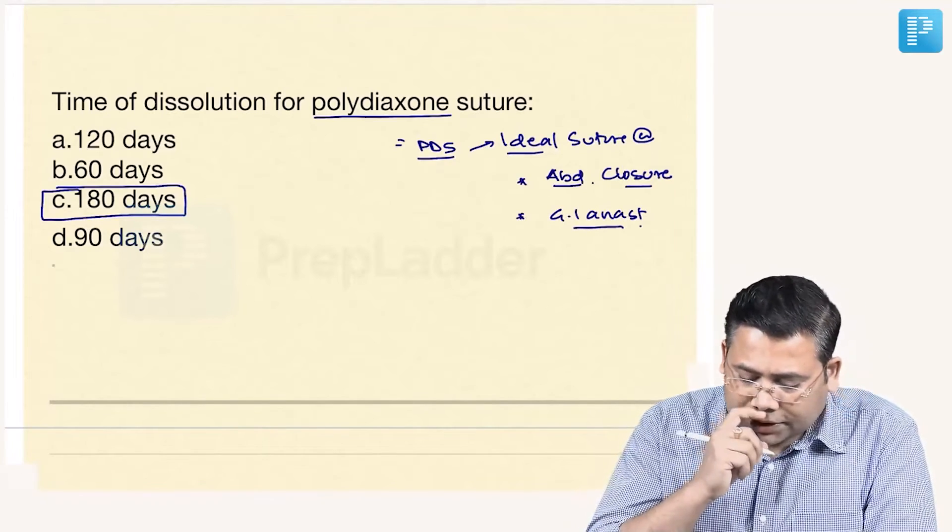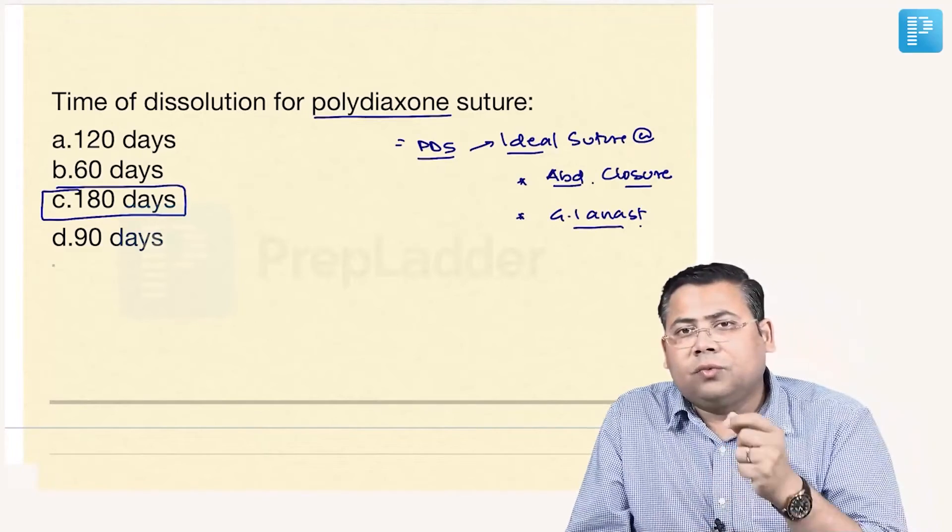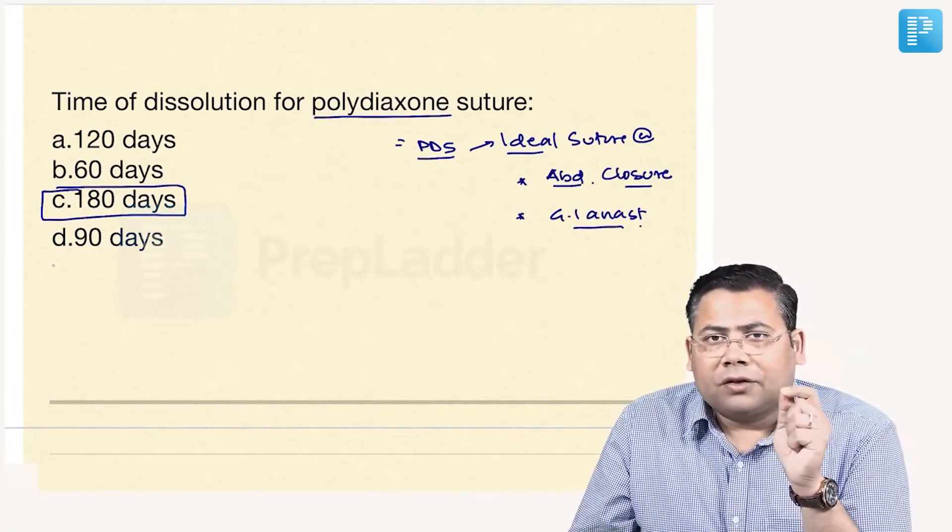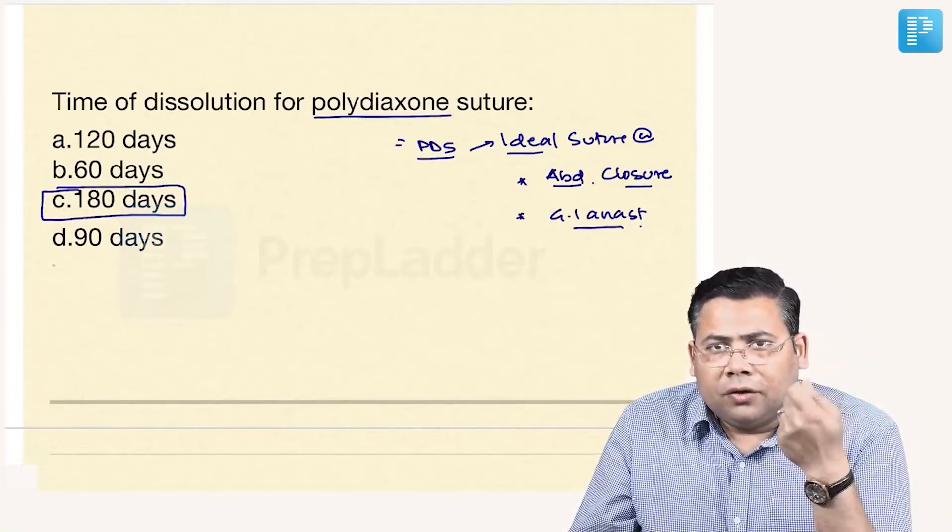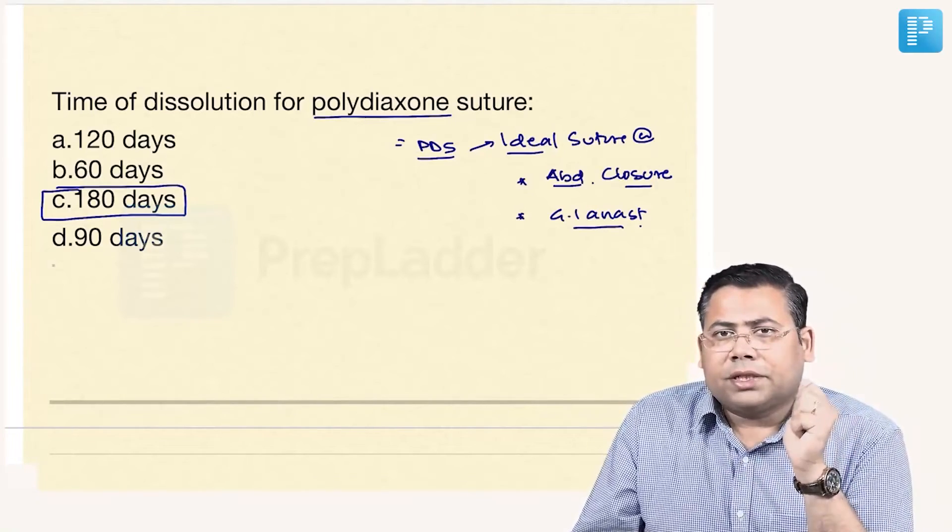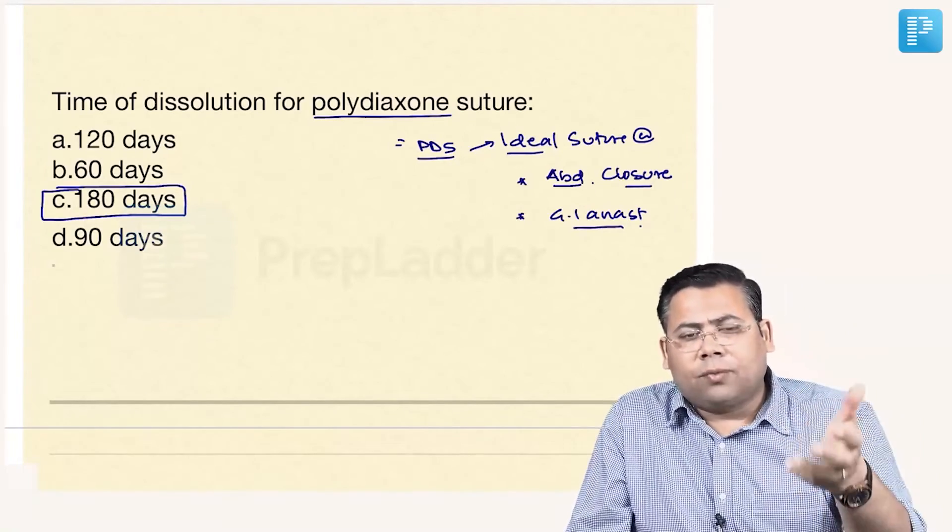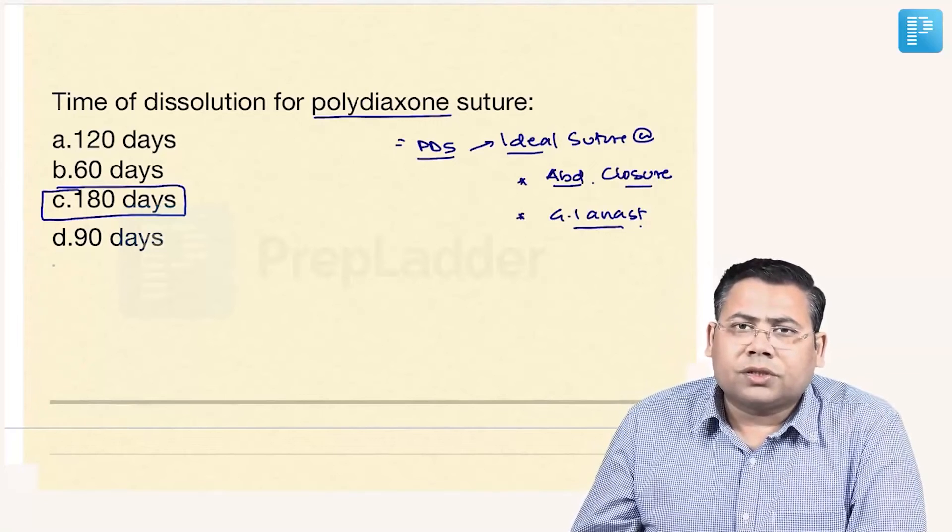The advantage of using PDS over Vicryl is that it is a smooth monofilament suture. It is not braided like Vicryl so you don't need lubrication or jelly to pass through and lesser tissue damage and it can be easily guided. Majority of the laparoscopic surgeons in laparoscopic surgery or robotic surgery are using PDS only for the anastomosis.